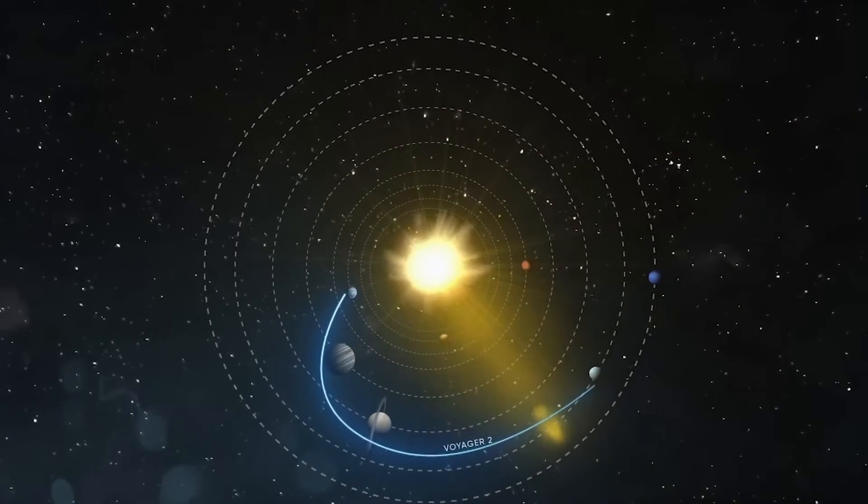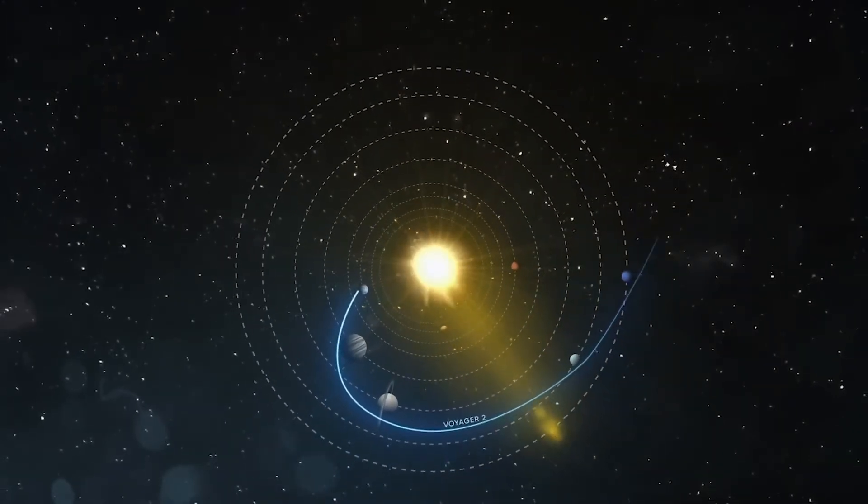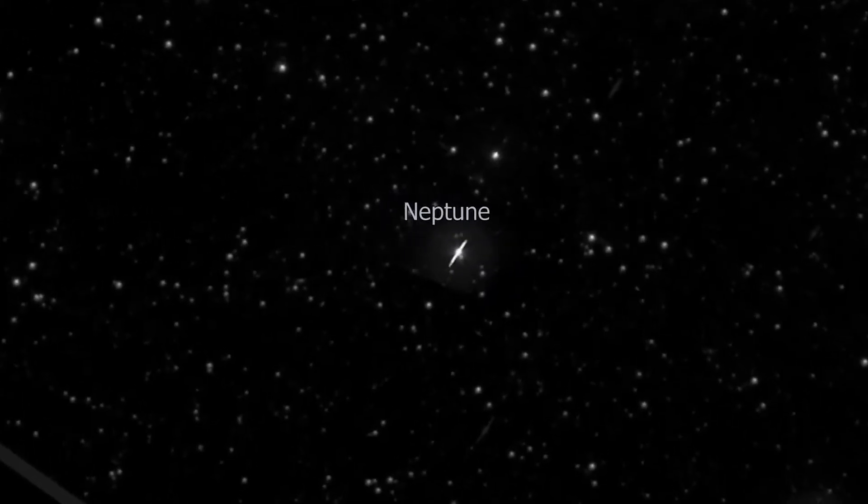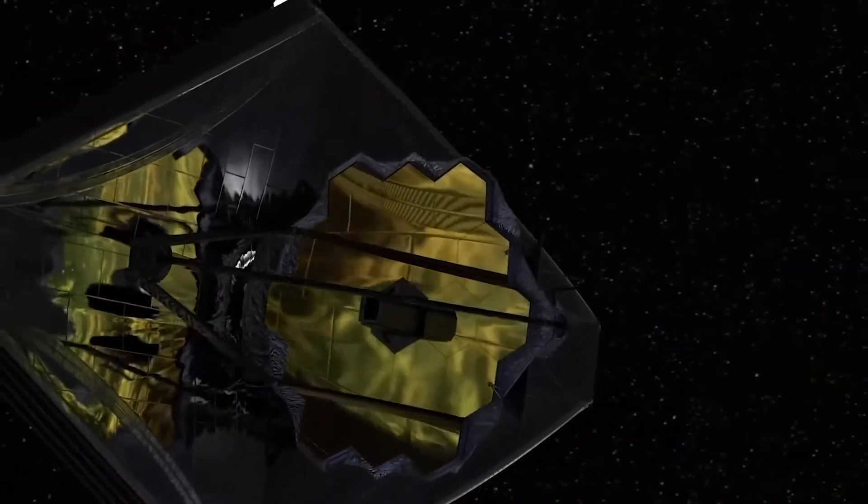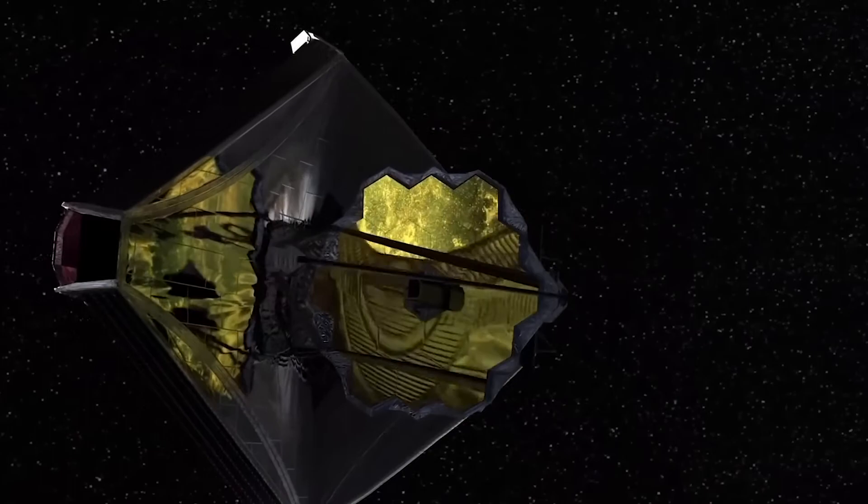Overall, Neptune's great dark spot remains a fascinating and puzzling feature in the outer solar system, and further research and observations are needed to better understand its formation, evolution, and underlying atmospheric dynamics.